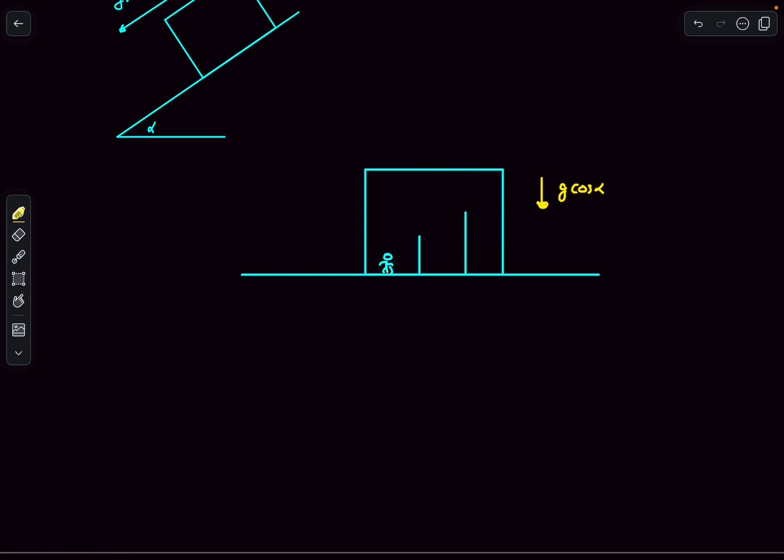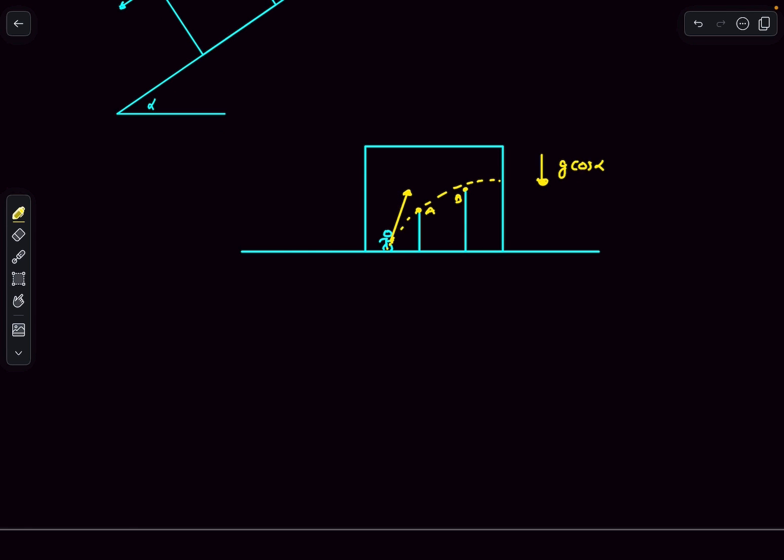Now the problem is that this guy wants to throw a projectile and he wants to throw it in such a way that the velocity of projection is minimum, but under the condition that the ball grazes these two walls. Let's say the guy projected the ball with a velocity of u.